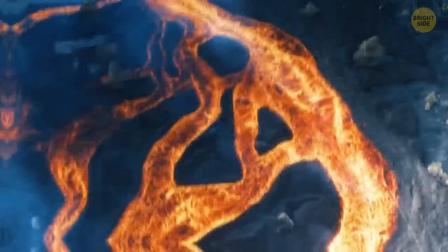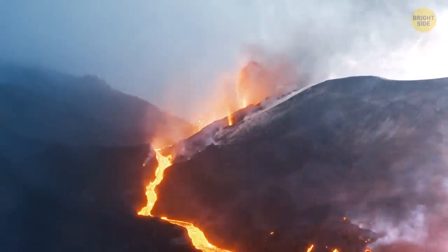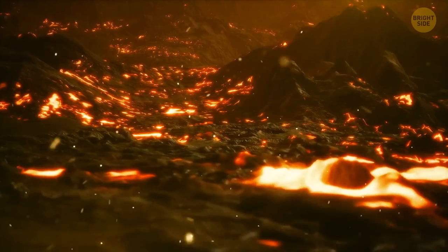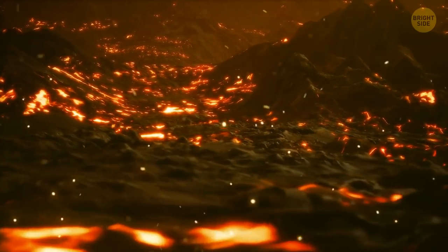Our planet resembled a huge cauldron of chemical elements. There were erupting volcanoes, earthquakes, and lightning flashes all the time. It was about 3.9 billion years ago.